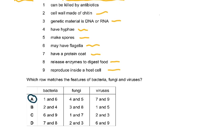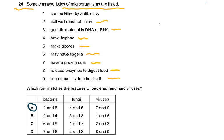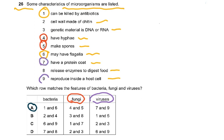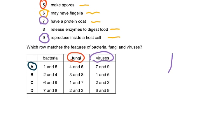Which row matches the features of bacteria, fungi and viruses? Bacteria was one and six — bacteria can be killed by antibiotics, and some bacteria may have flagella. Fungus was four and five — have hyphae and make spores. Viruses were seven and nine — they have a protein coat and they reproduce inside a host cell. So seven and nine was the correct answer for viruses, and that was how you fix this microorganisms question.